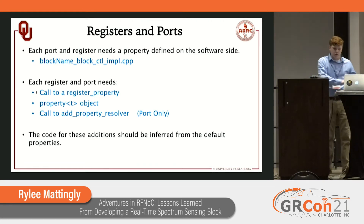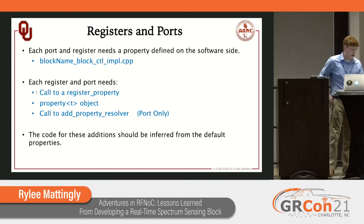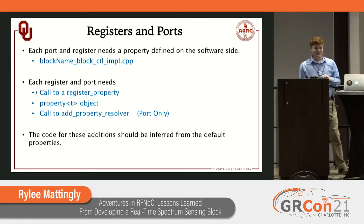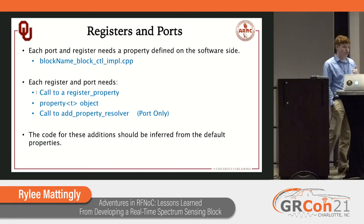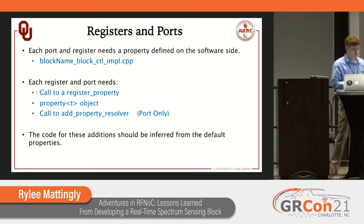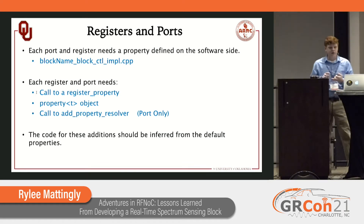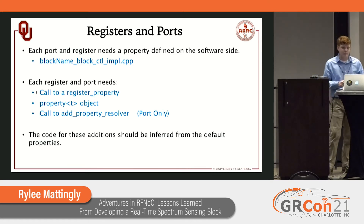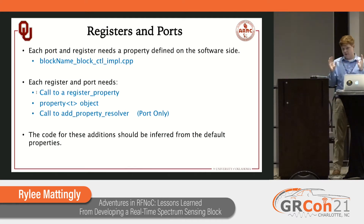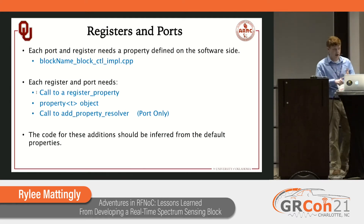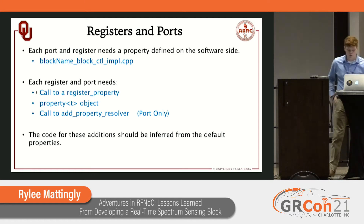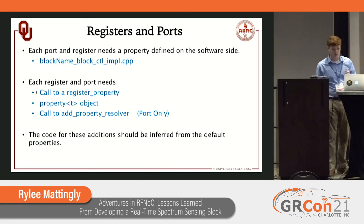Now we can move to the software side. These are the things we had to add for each new register and each new port to make them function — kind of a checklist. There's a call to register_property for each register and port, a property object that you need, and then for each additional port, an add_property_resolver. Each block has a default input port, output port, and register in there, so there is example code — you just take that as your own, change your parameters, and increment your port numbers and register numbers.